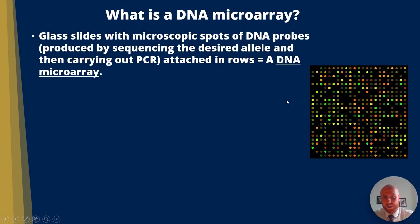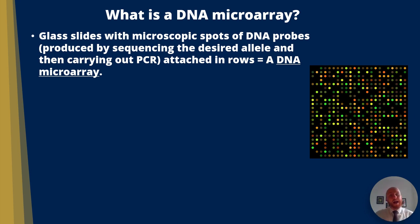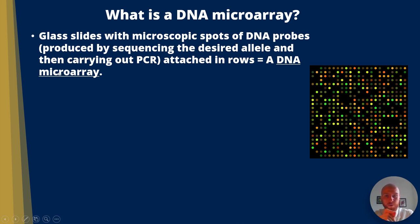What is a microarray? Basically, a microarray is where you take a glass slide with microscopic spots of DNA probes. Those DNA probes are produced by sequencing the desired allele and then carrying out PCR to make many copies of that specific probe. These are attached in rows, and we call that a DNA microarray — micro because we're dealing with something microscopic, and array because it's an arrangement in rows, as shown in the diagram on the right.